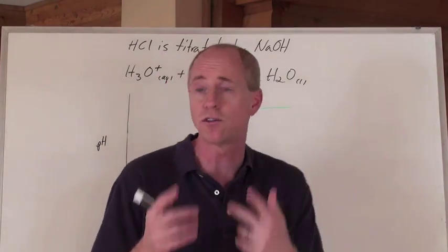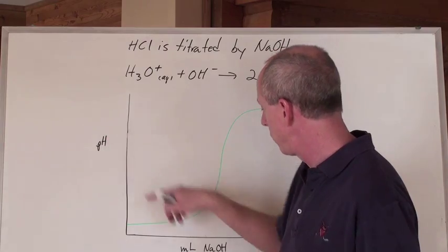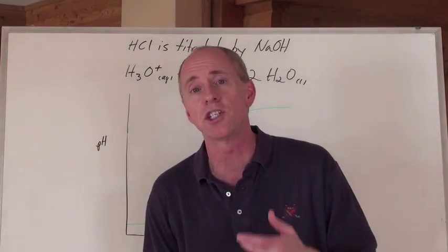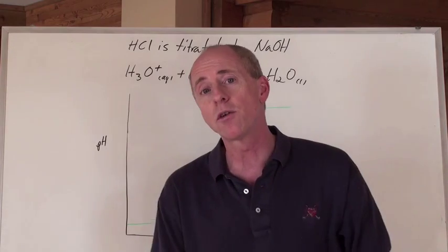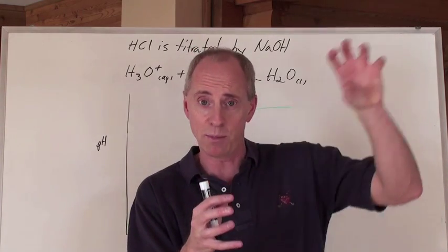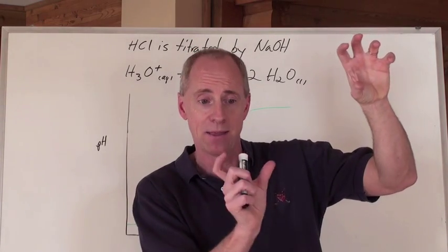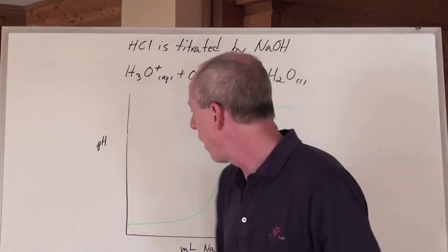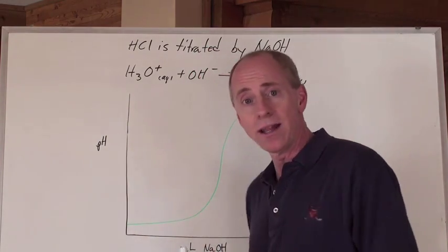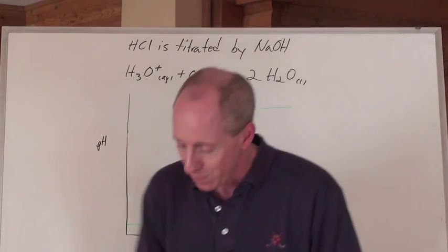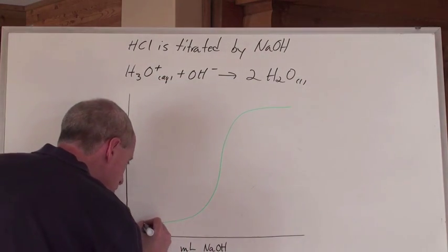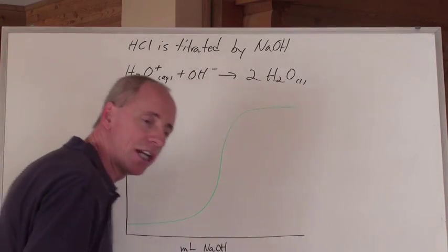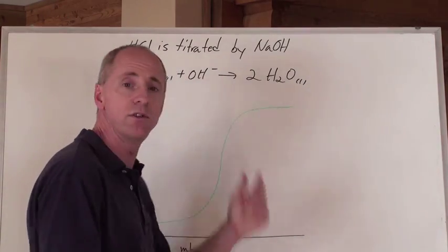If you graphed concentration of hydronium versus milliliters of NaOH added, it would be more of a straight-line relationship. But logarithmically, because we're dealing with the power to which base 10 is taken, you don't get much of a change at all at the beginning. We get a smooth line until all of a sudden the pH changes dramatically when it approaches the point of neutralization.